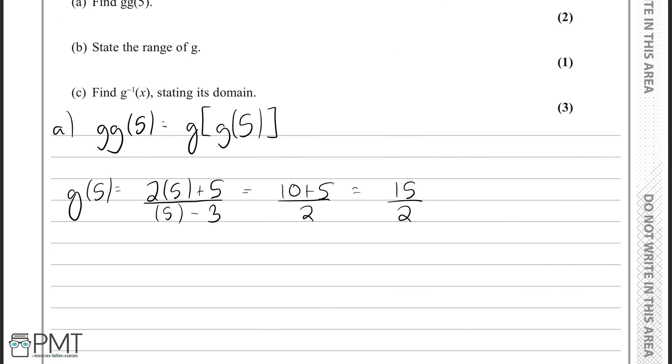Now remember, we're finding g of g of 5. But if g of 5 is 15 over 2, then now what we're really finding is g of 15 over 2, which is the same as g of g of 5. Now, putting this back into the function, we'll have 2 times 15 over 2 plus 5 over 15 over 2 minus 3.